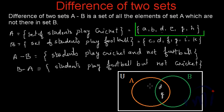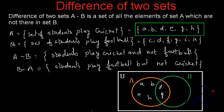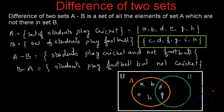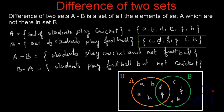The rest of the elements of A will be written inside the orange circle but outside the overlapping area. That means A, B, E and H will be here. For set B, D and G are already noted in the common area, and the rest of the elements — C, F, I and K — will be written outside the common area but inside set B.